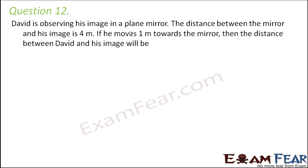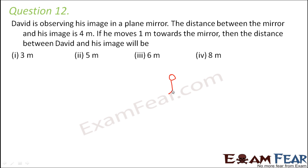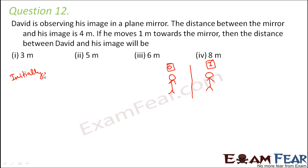Question number twelve: David is observing his image in a plane mirror. The distance between the mirror and his image is 4 meters. If he moves 1 meter towards the mirror, what will be the distance between David and his image? Let's draw the scenario — David is the object standing in front of the mirror, and his image is formed behind it. Initially, the distance between the mirror and his image is 4 meters.